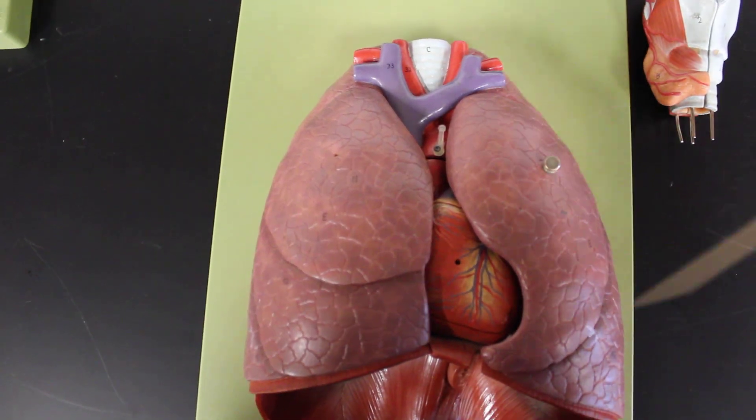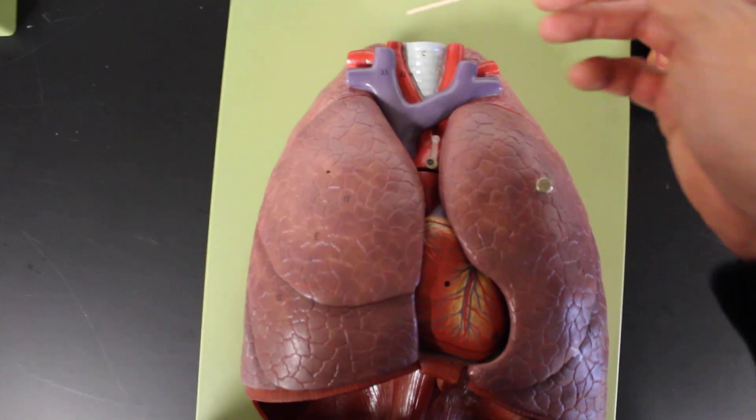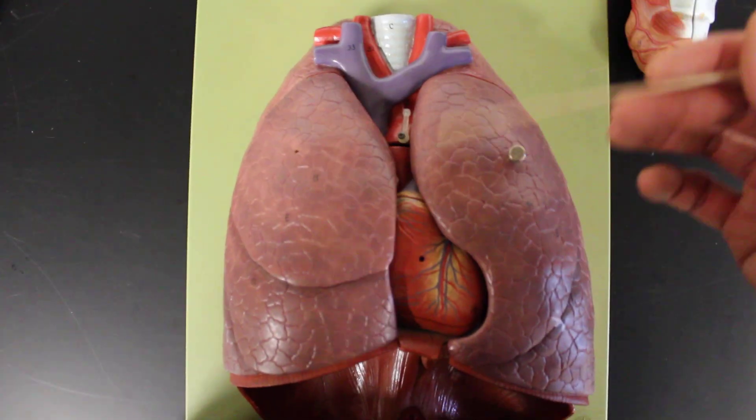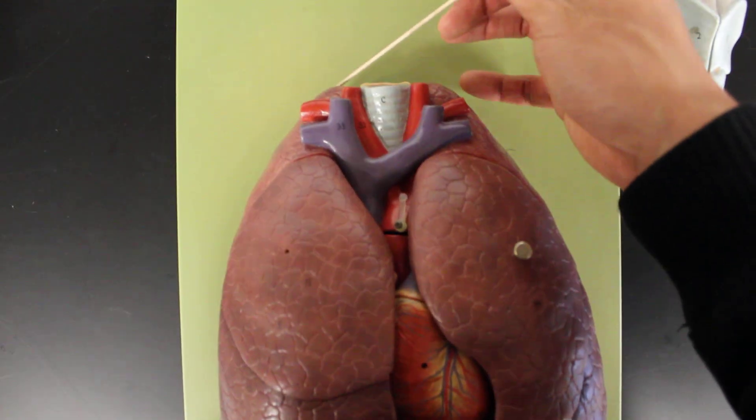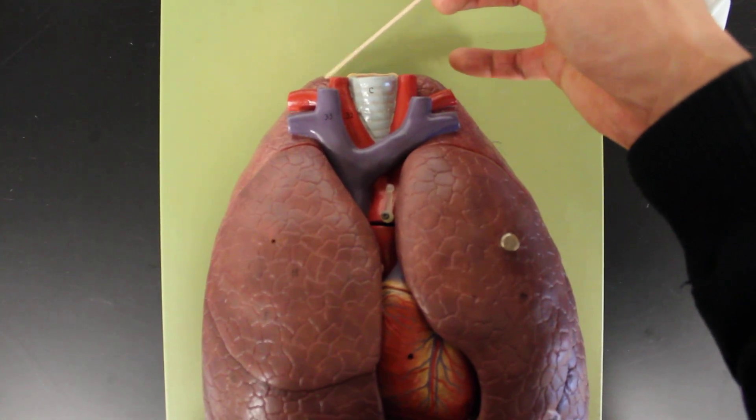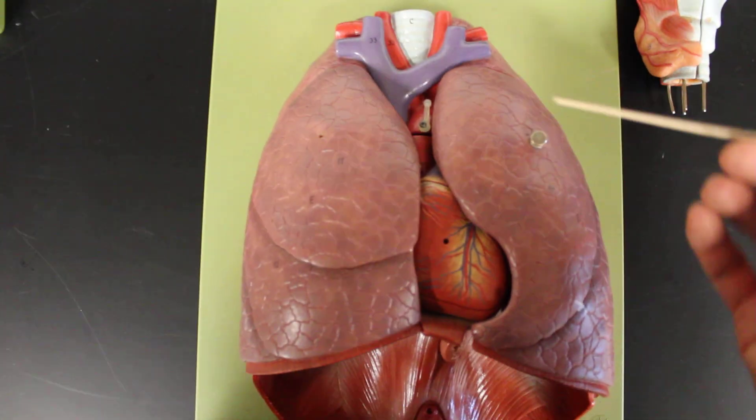Currently in this type of view, we can see many different structures. The first of which is just the overall structures. We'll find the base of the lungs. We'll find the tips of the lungs being, or the tops of the lungs being called the apex of the lungs. And then we have different lobes.